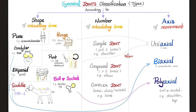Classification by number of articulating bones: simple — just two bones; compound — more than two bones, such as the elbow; complex — has the whole package: bones, discs or menisci, ligaments, everything.